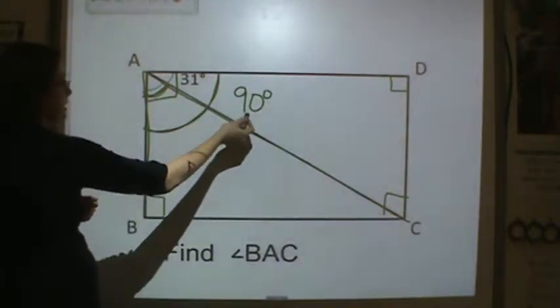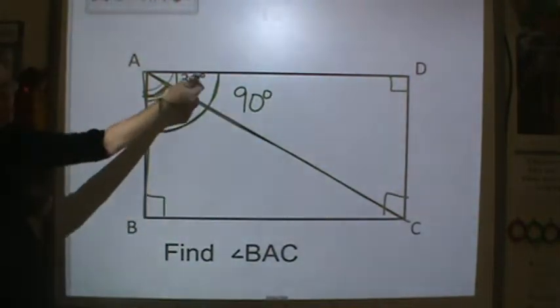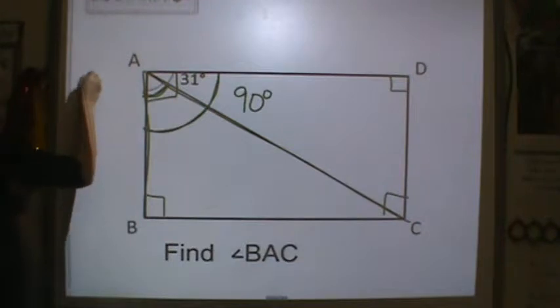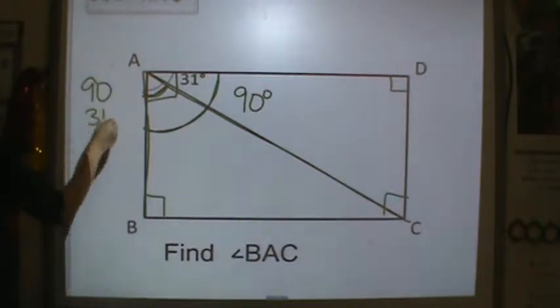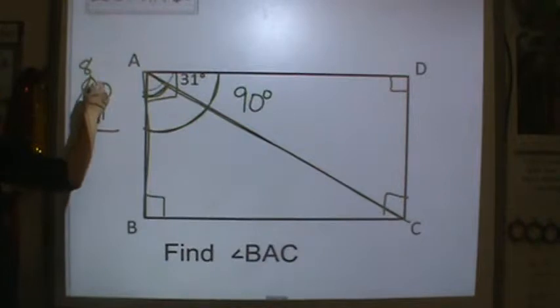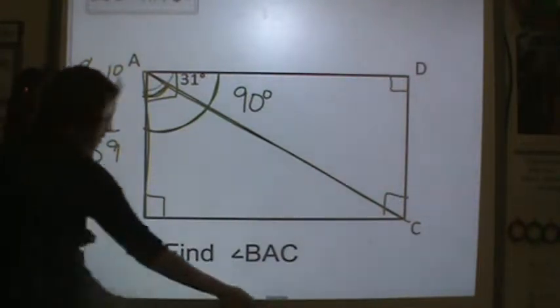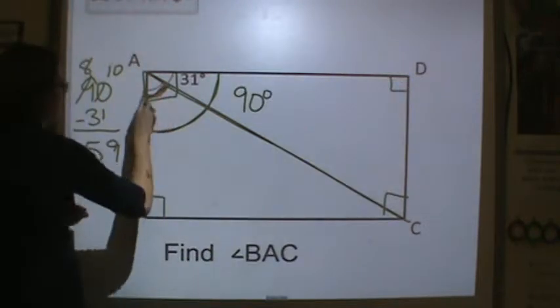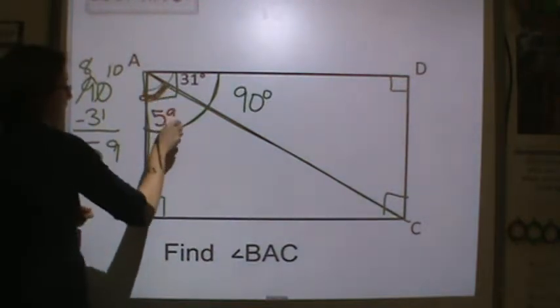If this is 90 degrees, if I take away this part which is 31, I have 90 subtract 31 to get the missing value. You've got to regroup. 3 from 8 is 5. So this missing angle right here is 59 degrees.